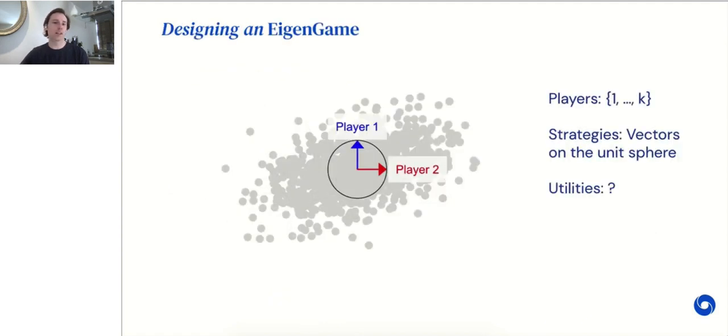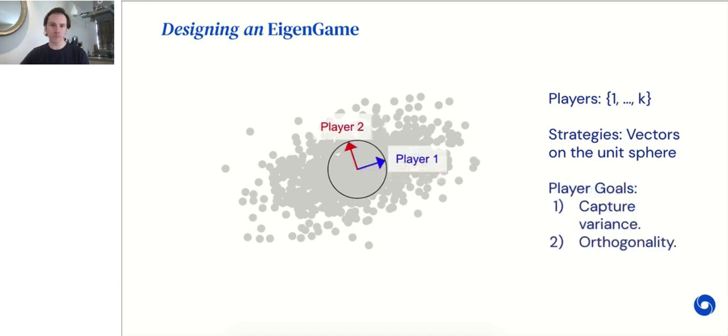So how would we design an eigengame? Consider trying to extract the TOP-K principal axes or components of the following data cloud. We'll have K players, one for each axis, and each will control a vector on the unit sphere. But what would make for appropriate utilities? Intuitively, we want players to balance two goals. One is to align with directions that capture maximum variance in the data. The other is to remain orthogonal to each other.